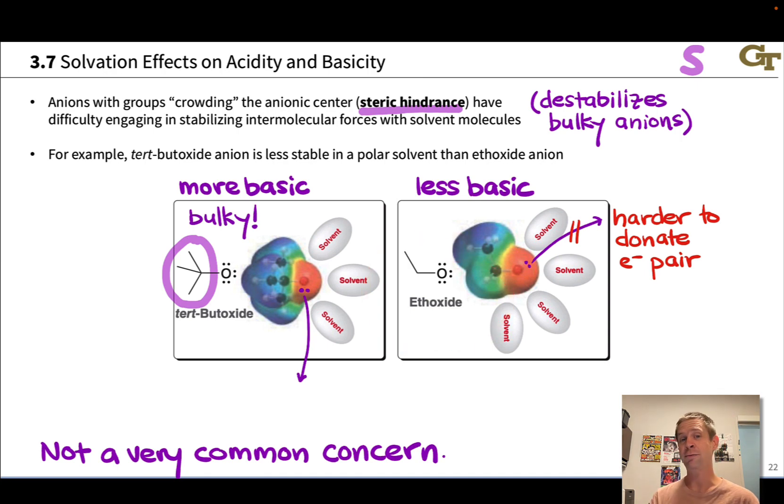And this is a measurable difference in terms of pKa. We can apply the conjugate seesaw here and say that tert-butanol, the conjugate acid of tert-butoxide, is less acidic, because its conjugate base is more basic, than the conjugate acid of ethoxide, which is ethanol.